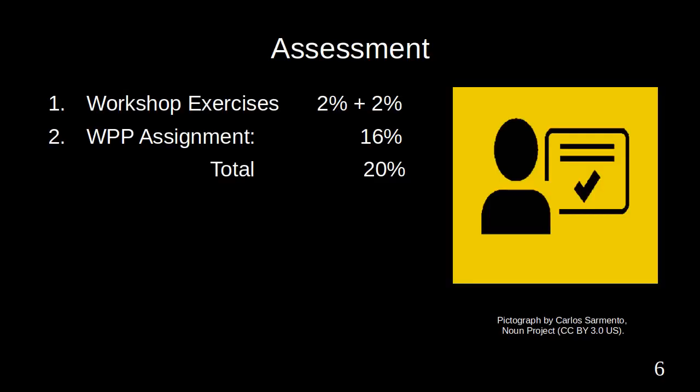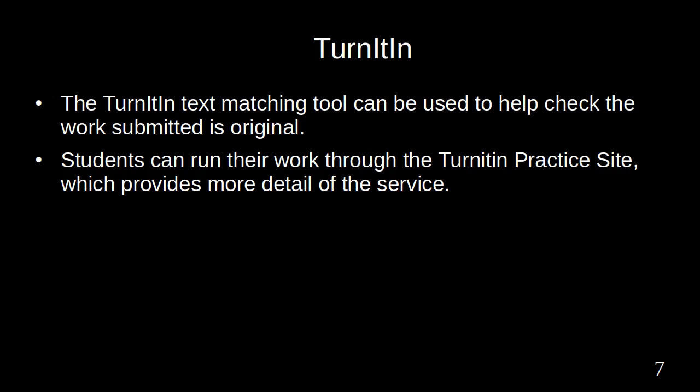The Work Portfolio Package (WPP) assignment makes up 16% of your final grade, and two workshop exercises contribute 2% each, making a total of 20%. The Turnitin text matching tool can be used to help check that the work submitted is original. Students can run their work through the Turnitin practice site, which provides more detail of the service.